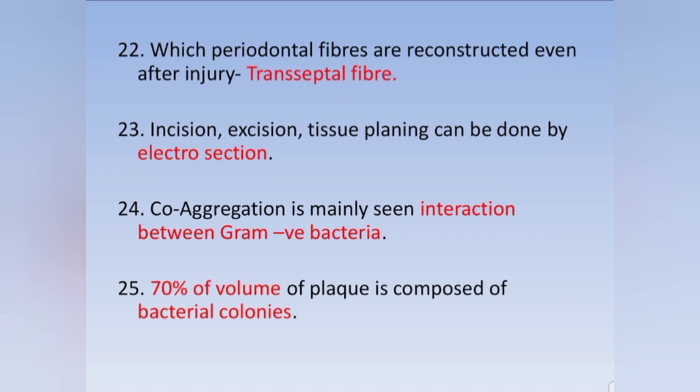The periodontal fiber that is reconstructed even after injury is the transseptal fiber. Incision, excision, and tissue planing can be done by electrosection. Co-aggregation is mainly seen in interactions between gram-negative bacteria. Seventy percent of the volume of plaque is composed of bacterial colonies.